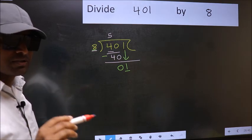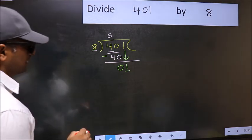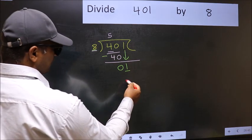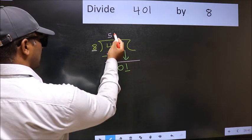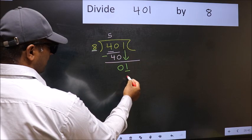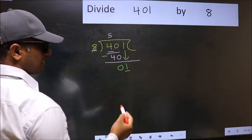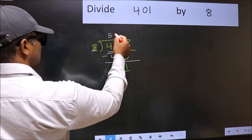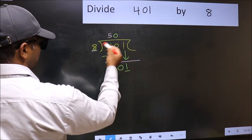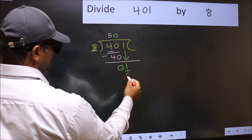Instead, what you should think of doing is, which number should we take here. If I take 1, we will get 8. But 8 is larger than 1. So we should take 0. So 8 into 0, 0.